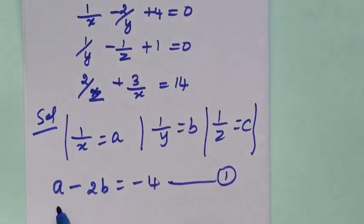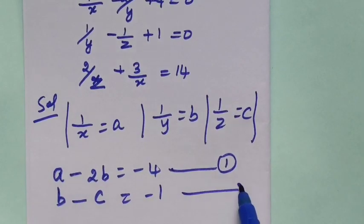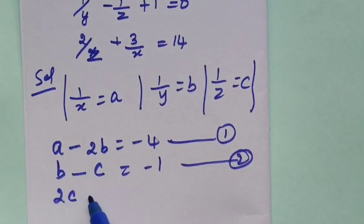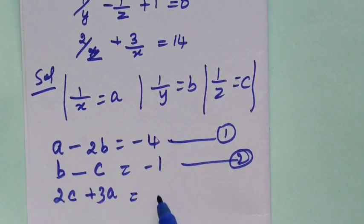1 by y is b, 1 by y minus 1c plus 1 on the side, minus 1. This is equation 2. Then 2 by z means 2c, then 3a equal to 14.